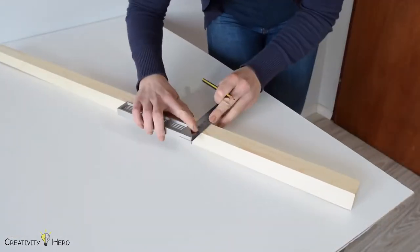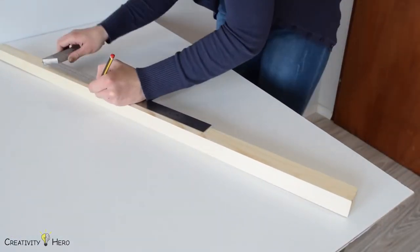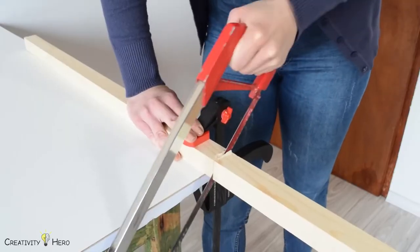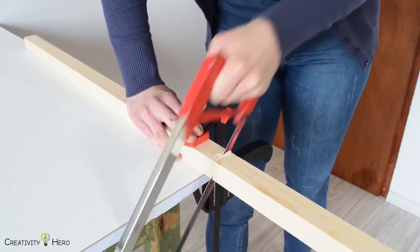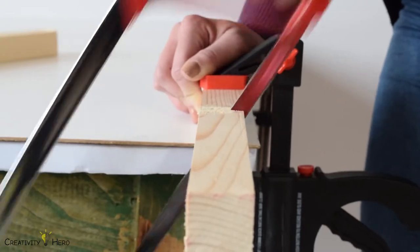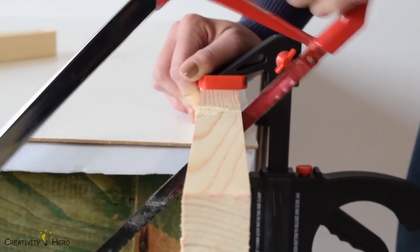First I marked all the dimensions needed for the lamp base. Then I cut the board using a hand saw. You can find the exact dimensions down in the video description.